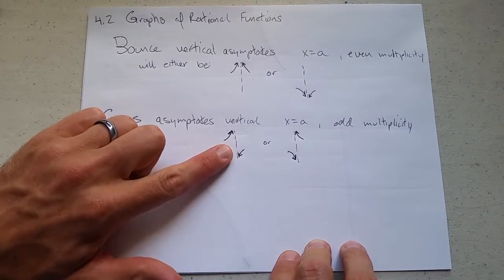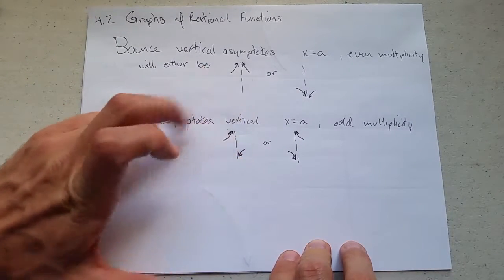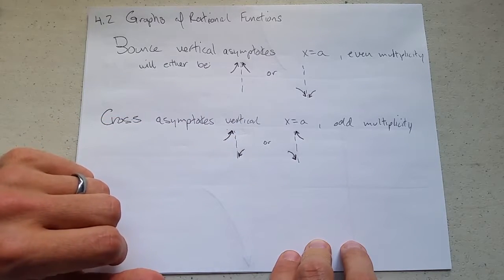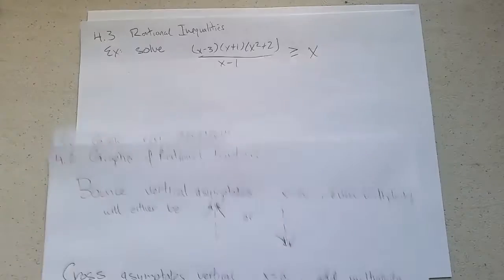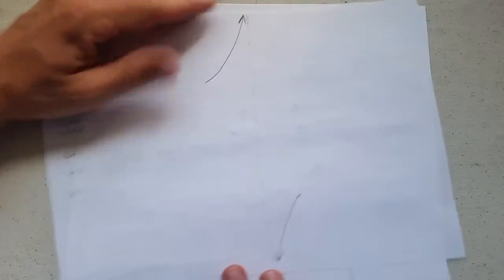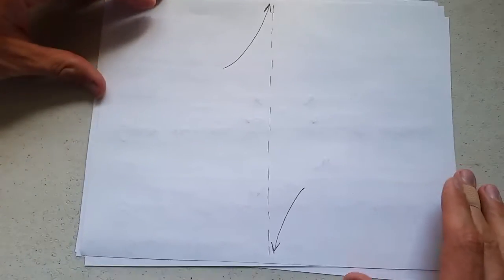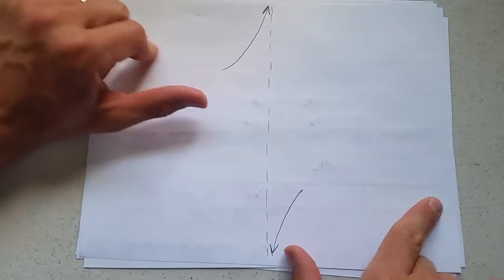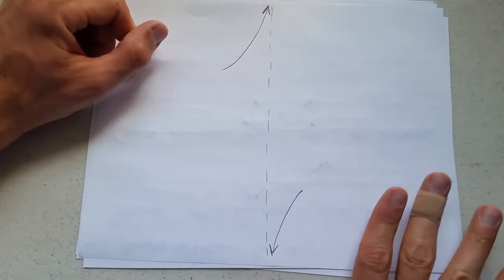Now you might be wondering, why do I call this a cross asymptote? What is it crossing? The short answer is it's crossing infinity. So this is what your asymptote looks like. There are more parts of the graph that don't matter for this portion.